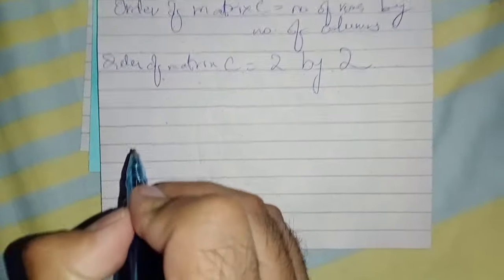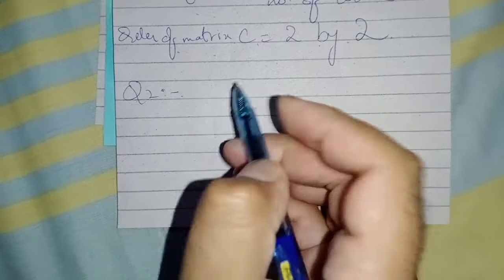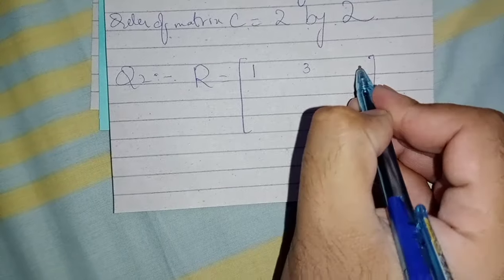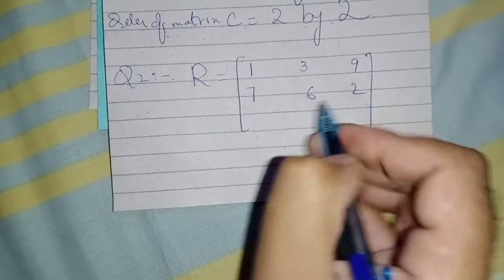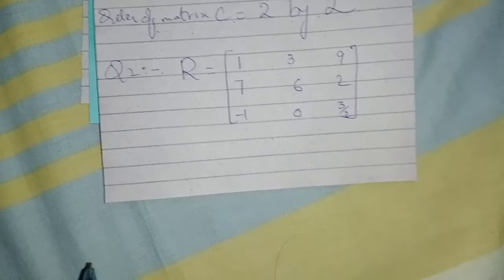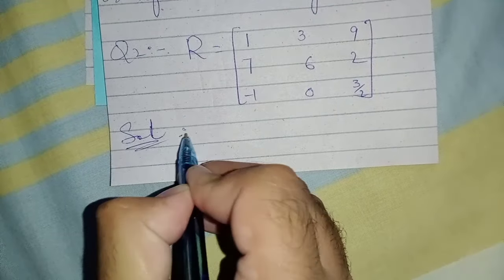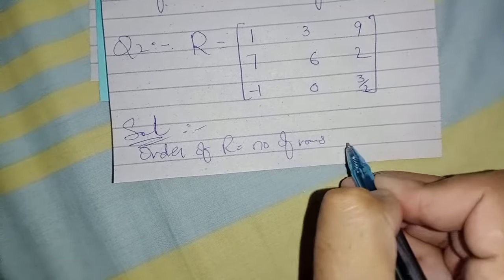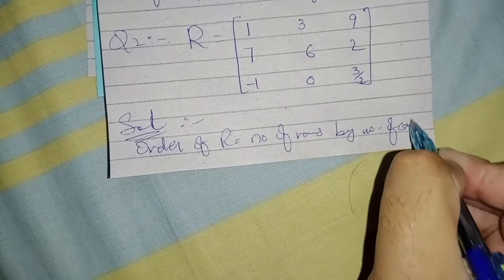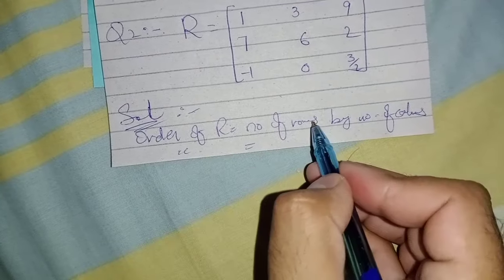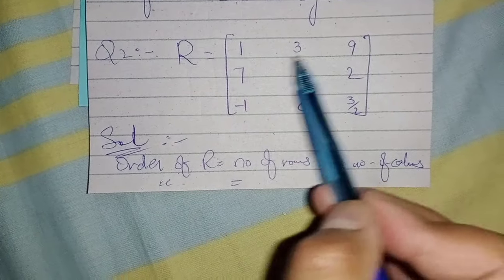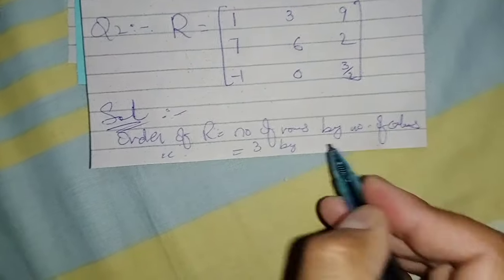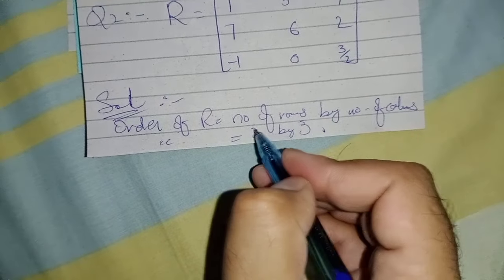Now we will consider another example. Let us suppose we have matrix R having values 1, 3, 9, 7, 6, 2, minus 1, 0, 3. The order of matrix R equals number of rows by number of columns. In this case we have three rows: row one, row two, row three. And we have three columns: column one, column two, column three. So the order of matrix R is three by three.